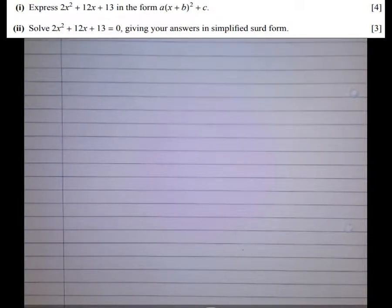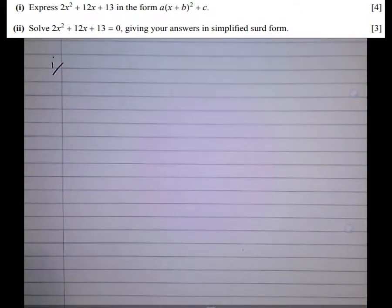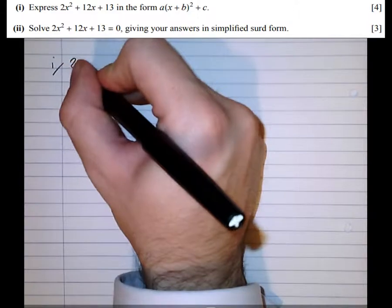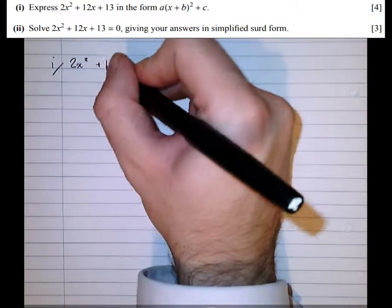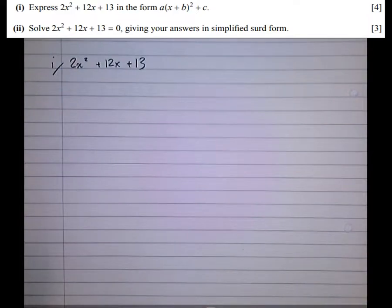We're now going to have a look at how to solve an equation by completing the square. Let's have a look at this exam question here. It's asking us to take 2x² + 12x + 13 and write it in complete square form as required by the question.